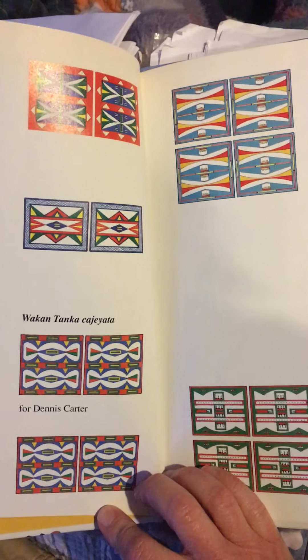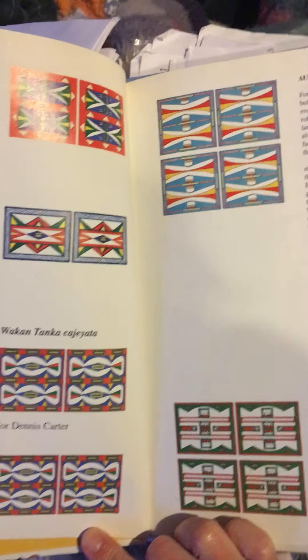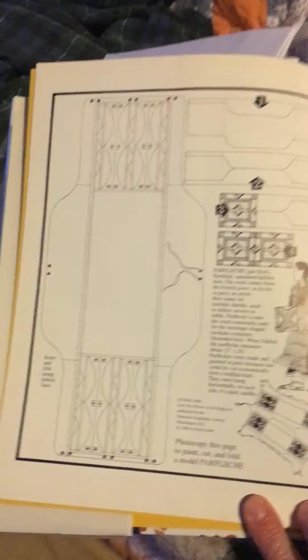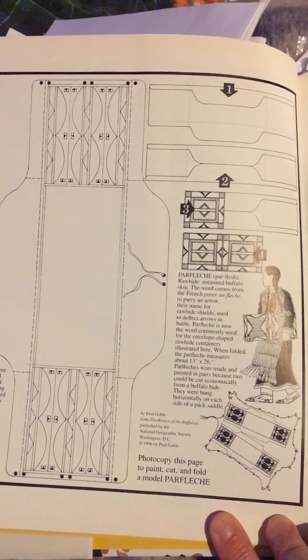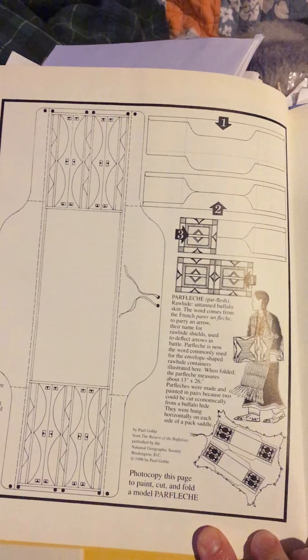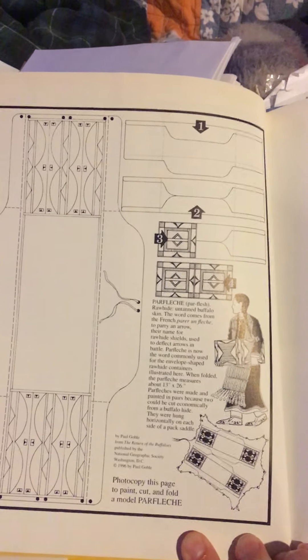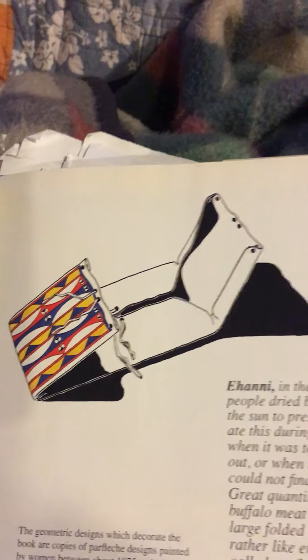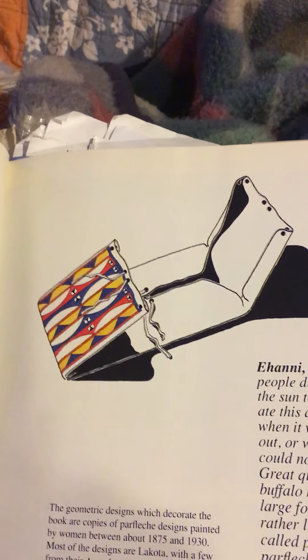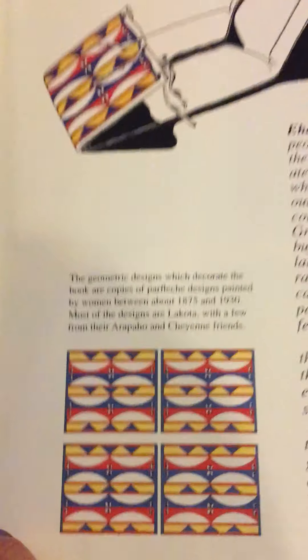They used these designs to make a special container called a par flesh and they decorate it with these beautiful designs on the outside. Here's a little look at what we're going to make. Keep an eye out for the designs on each page.